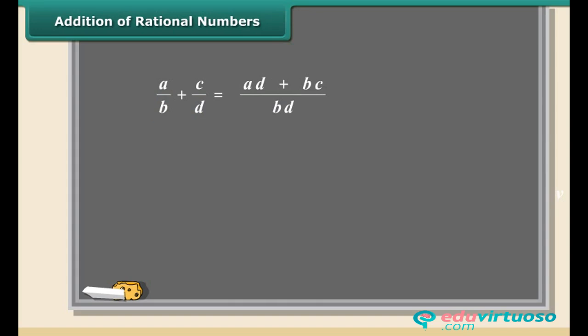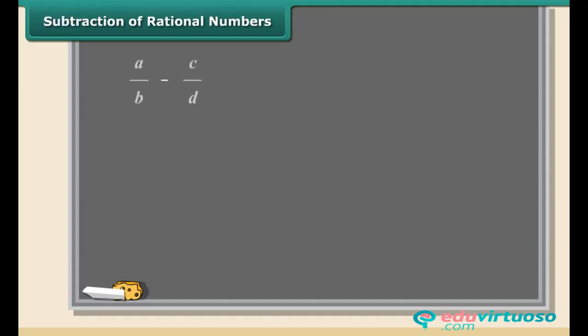Here is an example of addition. We will add five by four and one by four. See, the denominators are already the same. Now add the numerators and put the answer over the same denominator. This fraction can be further simplified to three by two.